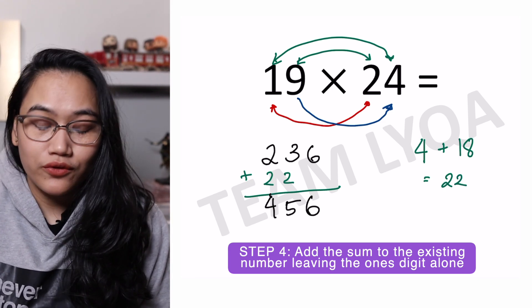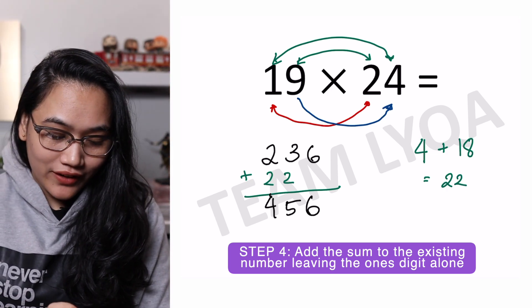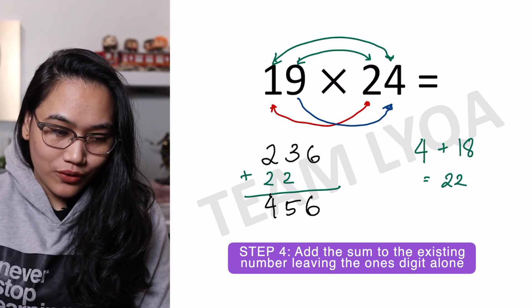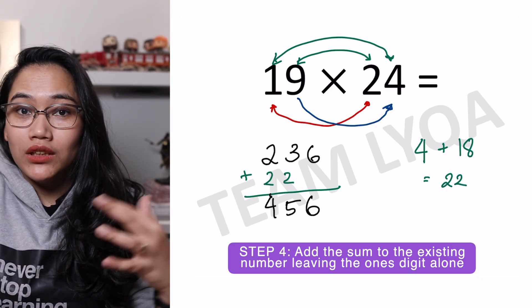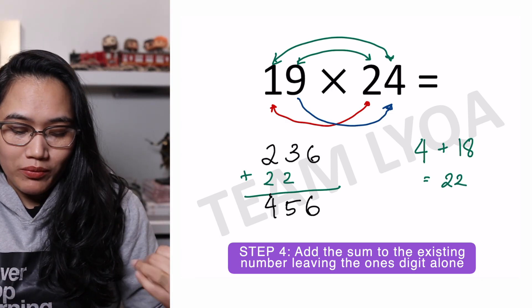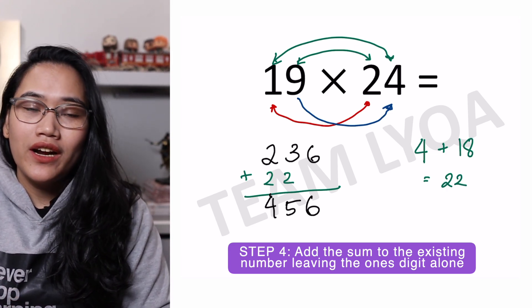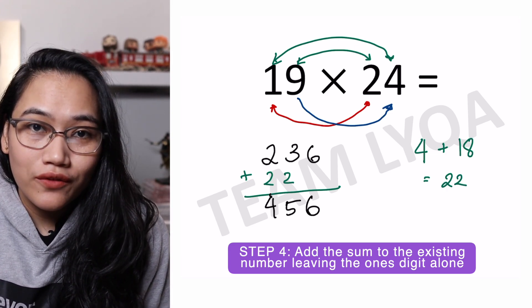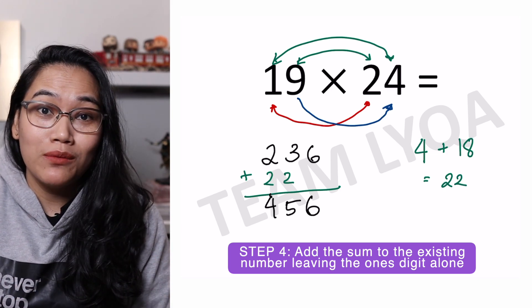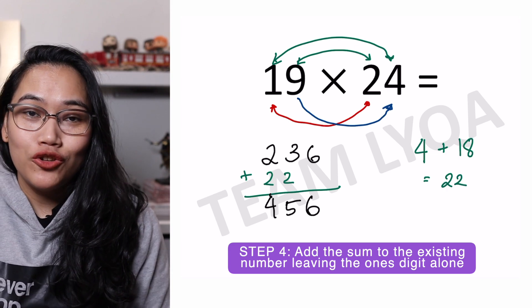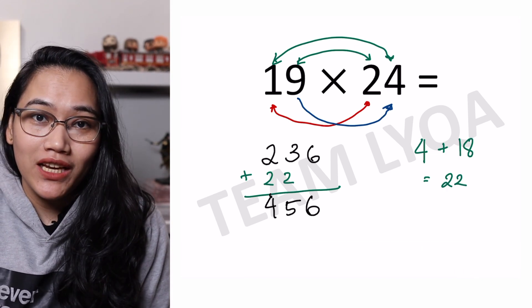19 times 24 is 456. For proof, let's use the calculator: 19 times 24 equals 456 — see that? Of course, you can also use other methods, like 19 times 20 first and then 19 times 4. There are different ways to solve this problem. This is just a new way. Practice and find out which method you're fastest with, and use whichever works best when you see it on exams or in real-life applications.